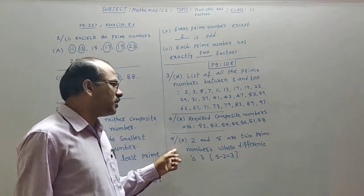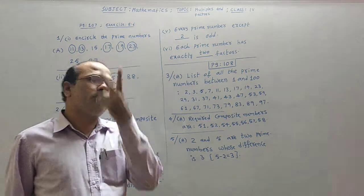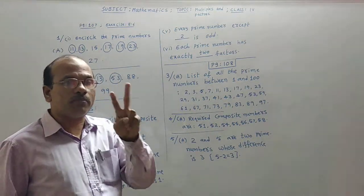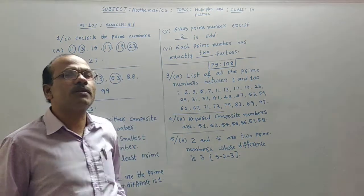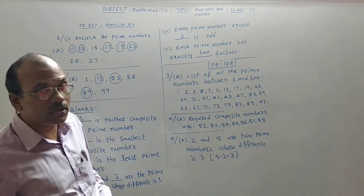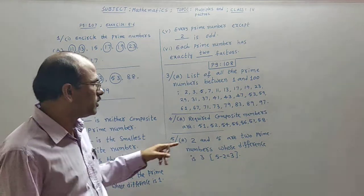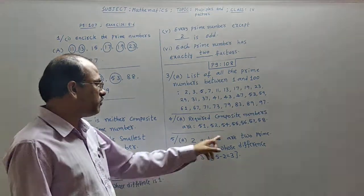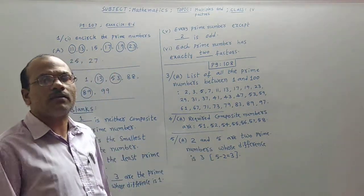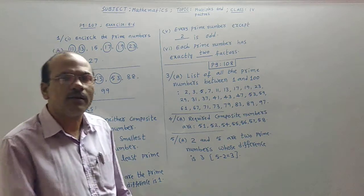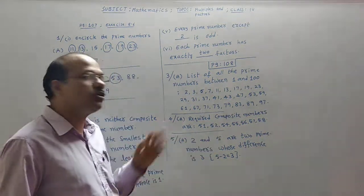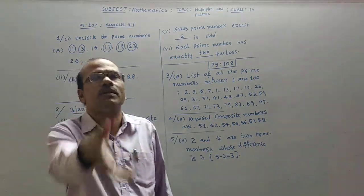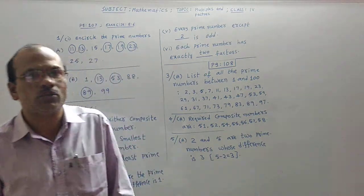Question 5: write 2 prime numbers whose difference is 3. We need to select two prime numbers such that their difference equals 3. The answer is 2 and 5, because both are prime numbers and 5 minus 2 equals 3 — the condition is satisfied. I hope things are very clear for you. The other part of teaching will meet in the next part. Okay students, take care.